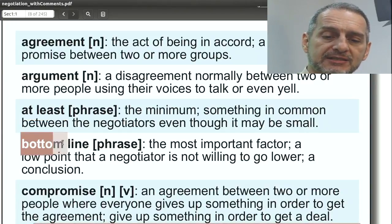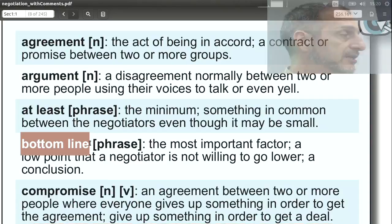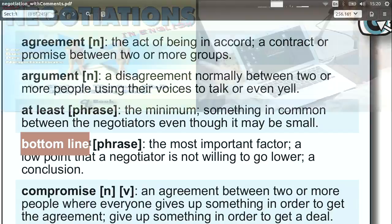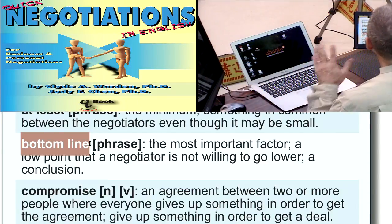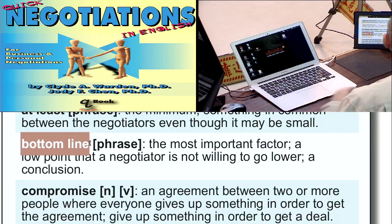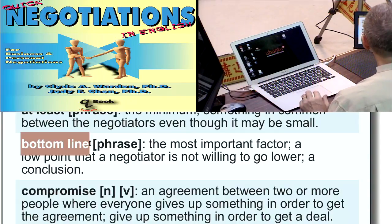Bottom line is related to this idea of at least. The bottom line is something you cannot go below. Usually it's used with an offer and price is involved: if you say my bottom line is $10, it means I cannot go further below $10. It can also be used for the whole package — this is the last offer I can make: this quality, this quantity, and this price altogether is my bottom line. Usually though it's used just with price.